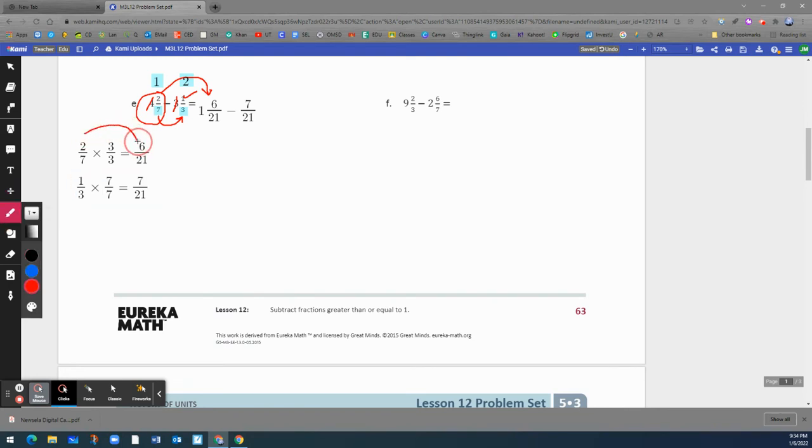Remember, two sevenths is the same thing as six 21s, because we multiplied it by one, which is three over three. And one third is the same as seven 21s. It's just a different way to write the same fraction, because we multiplied it by one, which is seven divided by seven equals one.